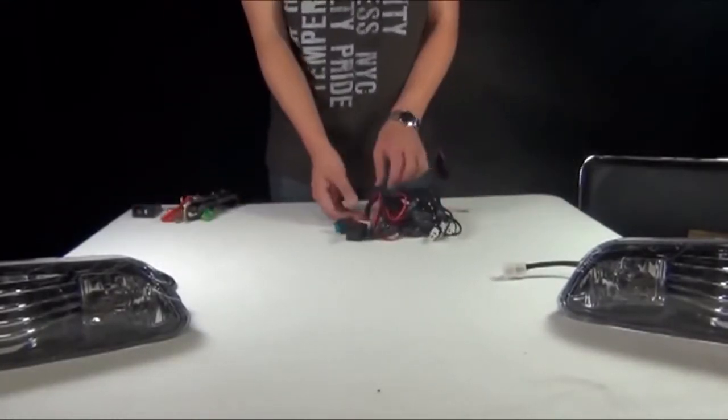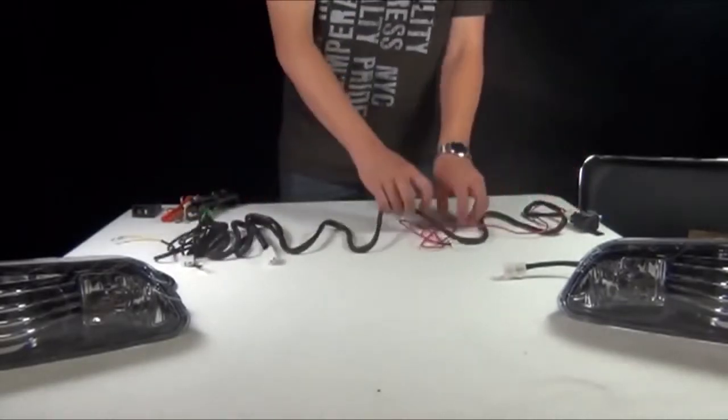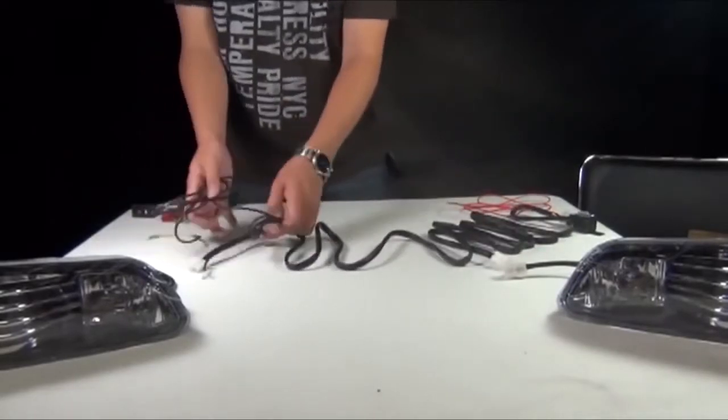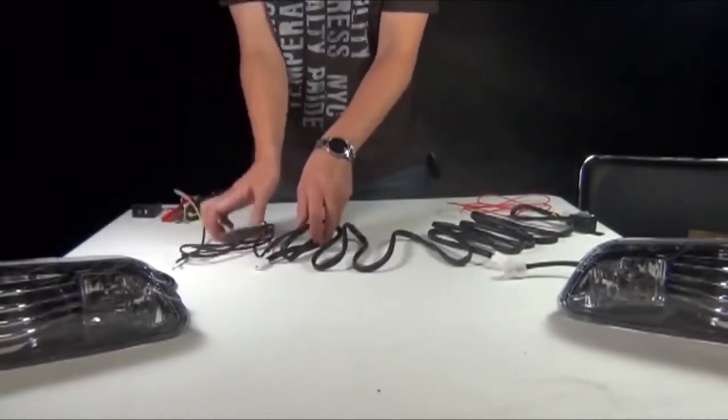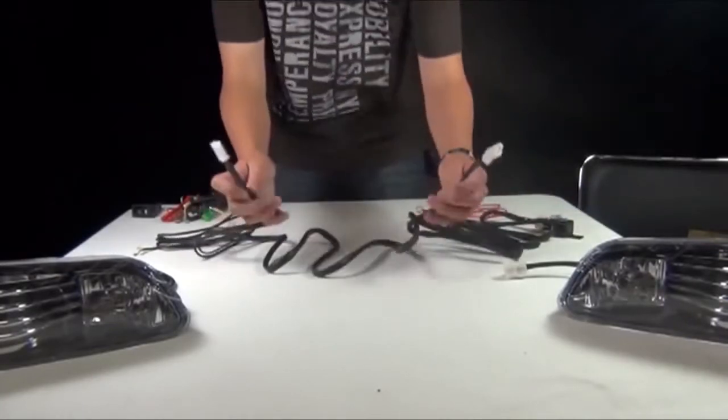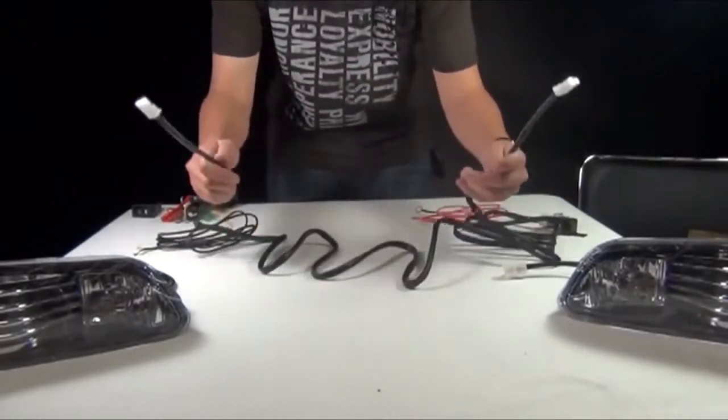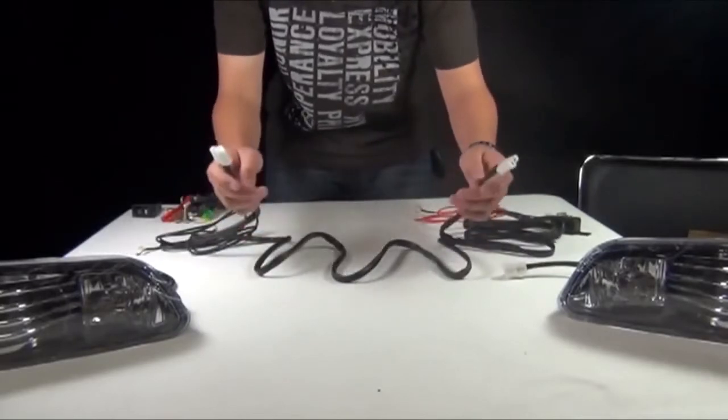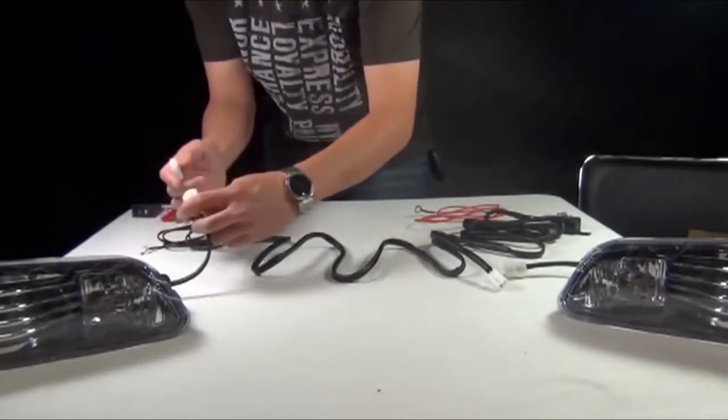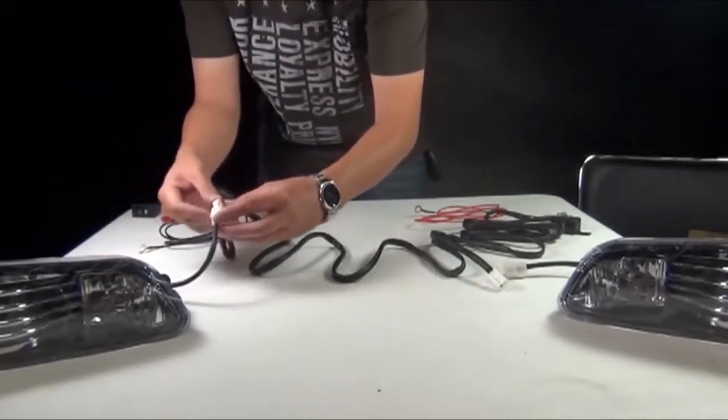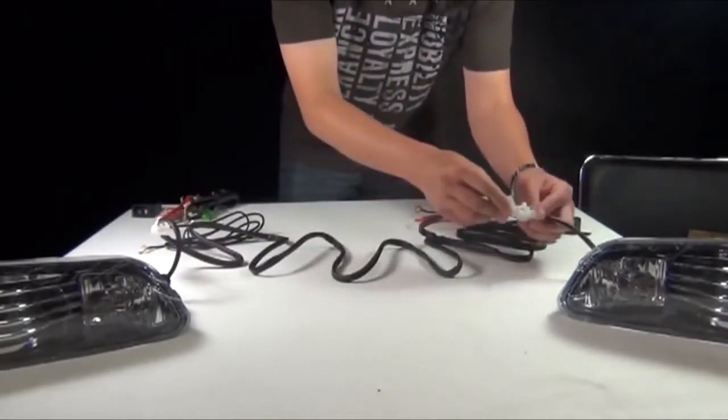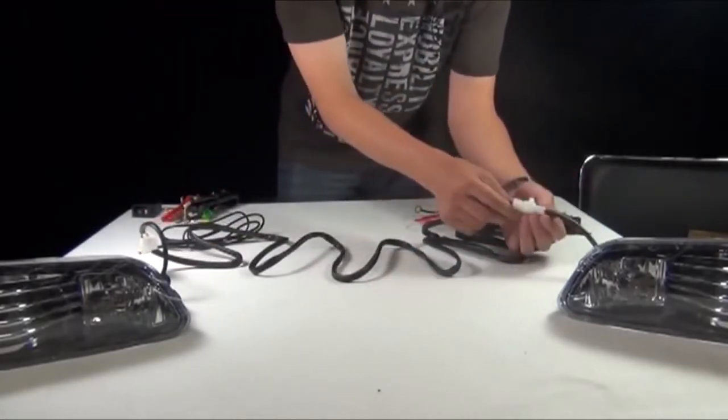Let's get started. As you lay out your wiring kit, you should have these two - these are to hook up to your fog lamps. It's a female plug and a male plug, and they should just fit fine.